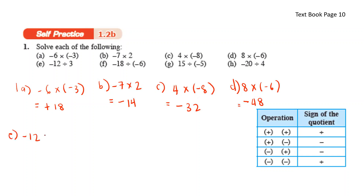Negative 12 divide by 3 — negative and positive, you get negative. 12 divided by 3, you get 4. Negative 18 divide by negative 6 — negative and negative, you get positive. 18 divided by 6, you get 3.